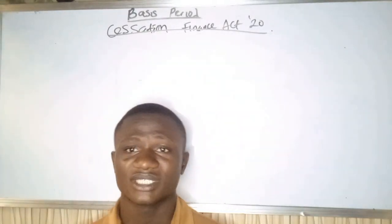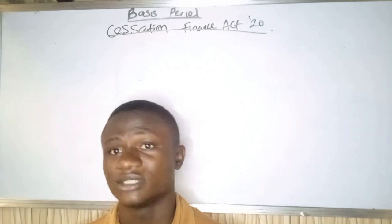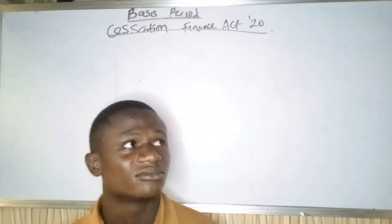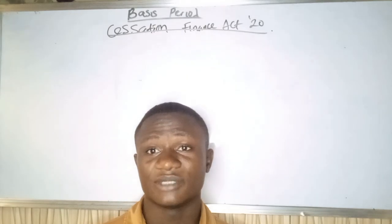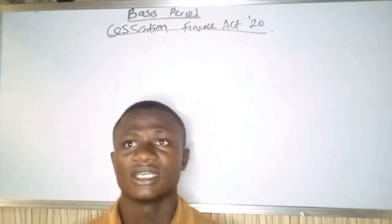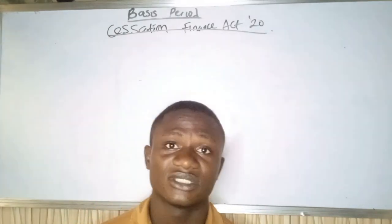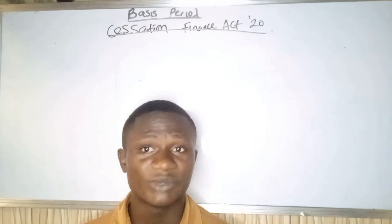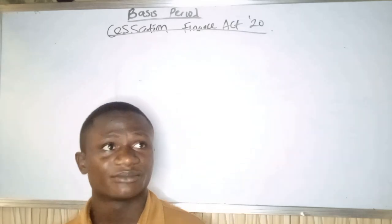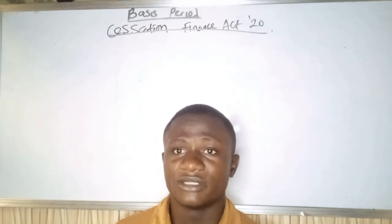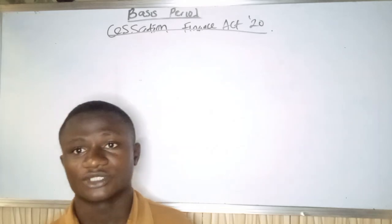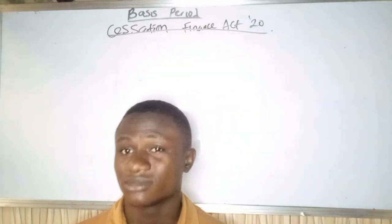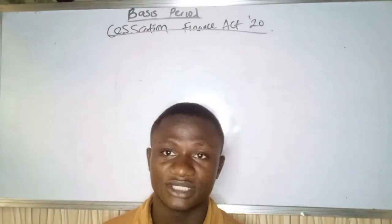So what do we mean by cessation of business? According to Finance Act 2020, what does the cessation rule state? A business can cease for a lot of reasons — it can be a management decision, it can be government policy. For example, maybe the government bans the production of a particular good, the company has to close down. These are all reasons why a business may cease.